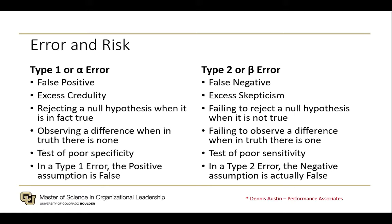Errors fall into one of two categories. Type 1, or so-called alpha errors, are what we call false positives — we are accepting something untrue as true when it is not. Sometimes this results from excess credulity: too much belief or too much enthusiasm. An example would be relying upon buying lottery tickets to fund your retirement. Sometimes it results from what is called poor specificity — essentially asking the wrong question, which results in the wrong answer.